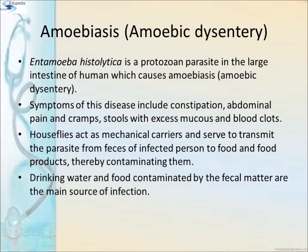Amoebiasis or amoebic dysentery: Entamoeba histolytica is a protozoan parasite in the large intestine of humans which causes amoebiasis or amoebic dysentery. Symptoms include constipation, abdominal pain and cramps, and stools with excess mucus and blood clots. House flies act as mechanical carriers and transmit the parasite from the faeces of infected persons to food and food products. Drinking water and food contaminated by faecal matter are the main sources of infection.